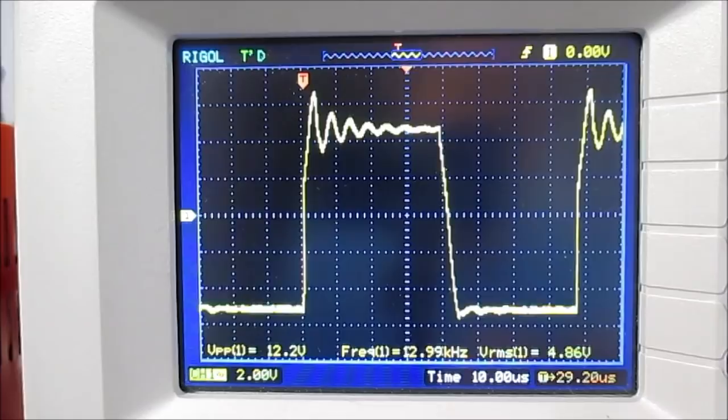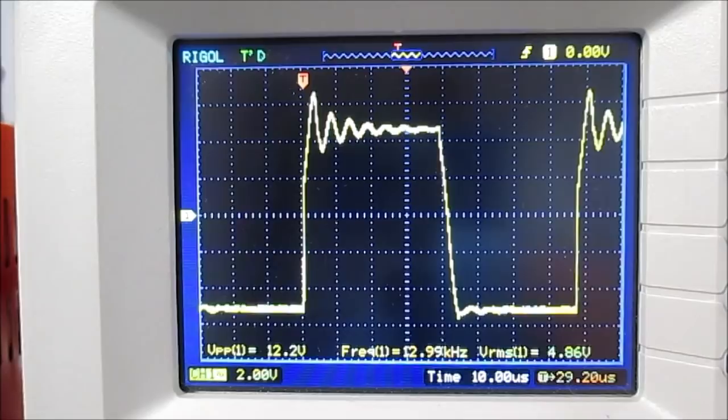So I think adding a capacitor across the feedback resistor would help. And I picked out a value here. You know, I tried a few things. So let's see what happens. So I placed this capacitor across R7.